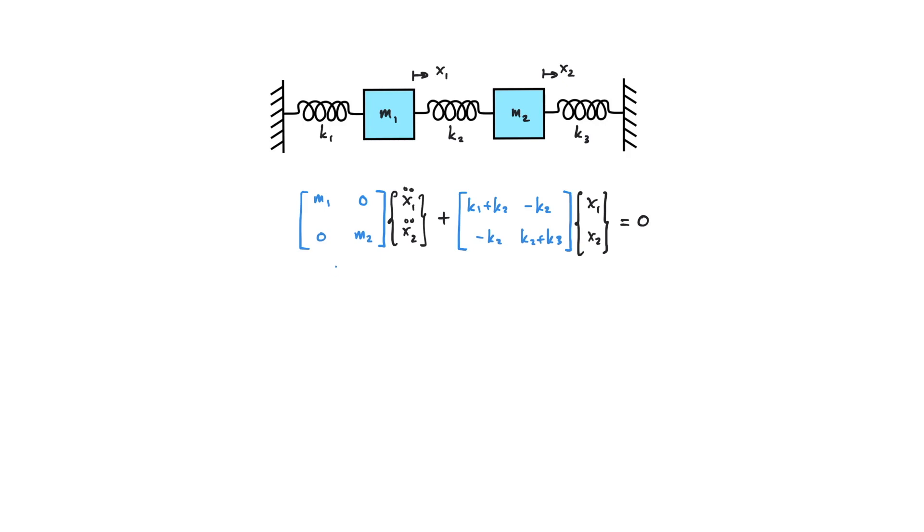Next I will write down this matrix in terms of symbols where M capital underscore for the mass matrix, X double dots with curly symbols on the top denotes the column vector, and the same for the stiffness matrix and the column vector for the displacement.